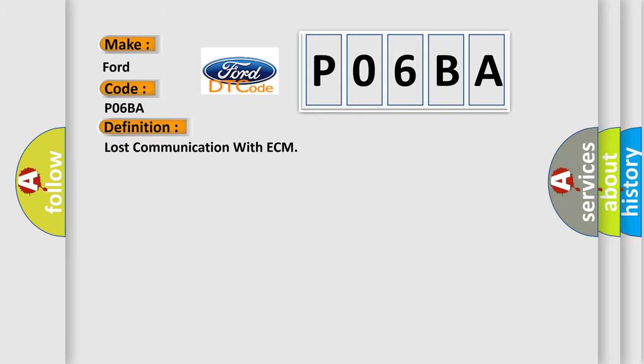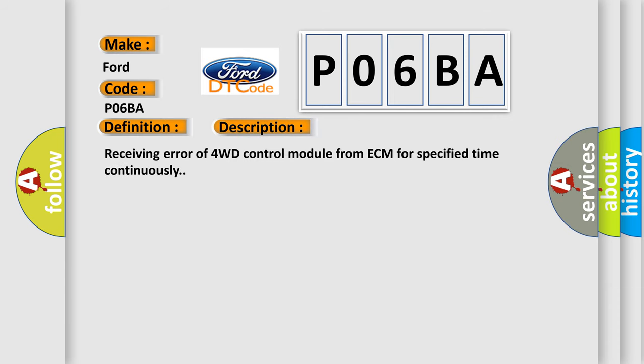The basic definition is Lost communication with ECM. And now this is a short description of this DTC code: Receiving error of 4WD control module from ECM for specified time continuously.